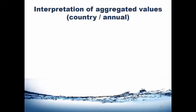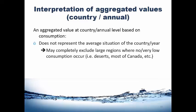Interpreting aggregated values at the country or annual level can be tricky. We would always recommend using the watershed and monthly scale as much as possible. But if not possible, some things to keep in mind: the average country or yearly value does not represent a snapshot of the visually average location. It may actually exclude large regions with no or very low water consumption, which could be very different from where water is consumed. For example, most of northern Canada would be excluded because there's very little water consumption there, yet this is where there is also a lot of water. So this is not necessarily reflected in these averages.